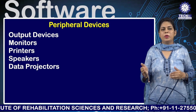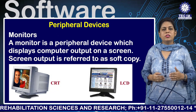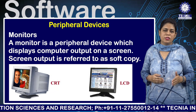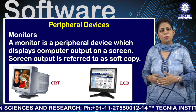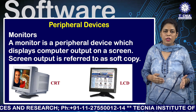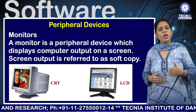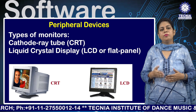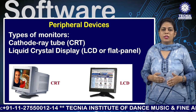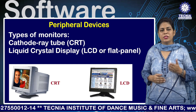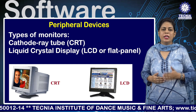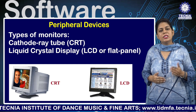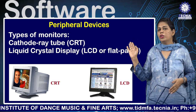A monitor is a peripheral device that displays computer output on the screen. Screen output is referred to as a soft copy. Types of monitors available include the cathode ray tube (CRT) and liquid crystal display (LCD) or flat panel, as shown in the diagram.